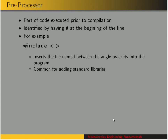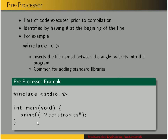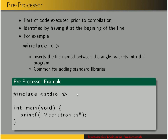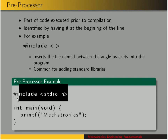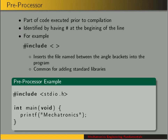The preprocessor is an important part of your program — it's the part of the code executed prior to compilation. Preprocessor commands are evaluated before the compiler looks at the rest of your program, and they're identified by having the pound symbol at the beginning of the line. One preprocessor command is 'include': pound-include, and then the filename goes between angle brackets. For example, here we include stdio.h with '#include stdio.h', which allows us to use the printf function from that library inside of main.